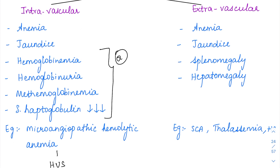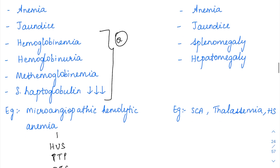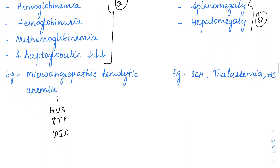In extravascular hemolysis, there is some defect in the RBCs, or it could be because of autoantibodies against the RBCs, causing death of the RBCs in the spleen. When RBCs are passing through the spleen, they cannot traverse through the sinusoids, or because of autoantibodies they are lysed in the spleen — hence called extravascular hemolysis. Because the spleen is the organ where RBCs are being lysed, there is organomegaly, so splenomegaly will be seen in these patients.